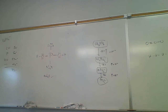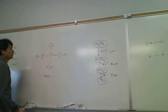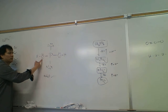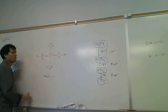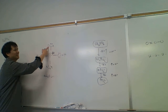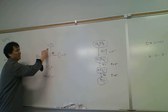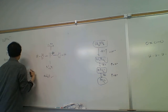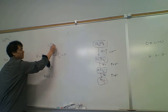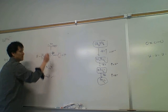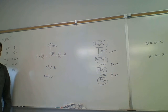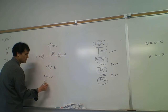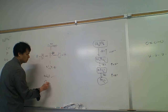We should also check the formal charges. The hydrogens are zero, the oxygens bonded to hydrogen are zero, but the phosphorus has a plus one formal charge and the two terminal oxygens each have a minus one. That gives a net of minus one, but the formal charge is not minimized.